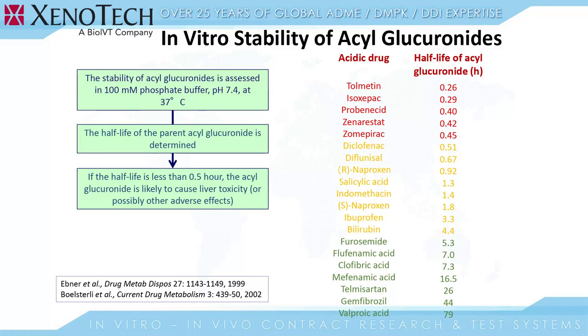On the right-hand side of this slide, we have a list of acid-containing drugs with their corresponding half-lives of acyl glucuronide metabolites. Please note that tolmentin is at the top of the list, with a half-life indicating it is a highly reactive molecule. Out of the five drugs listed at the top with the shortest half-lives, four have been withdrawn from the market due to liver toxicity.